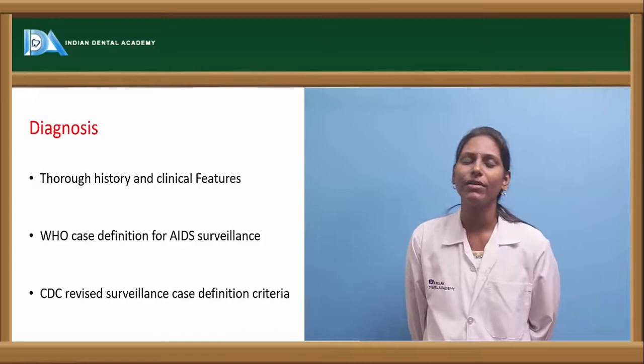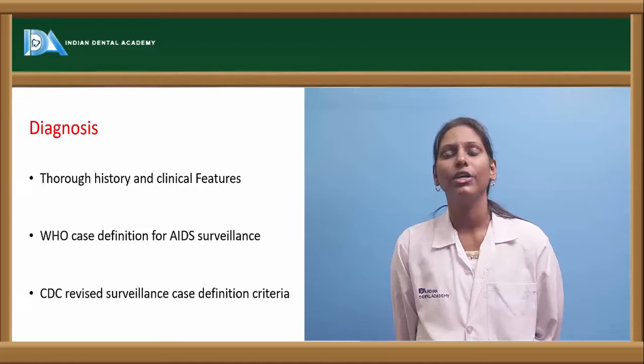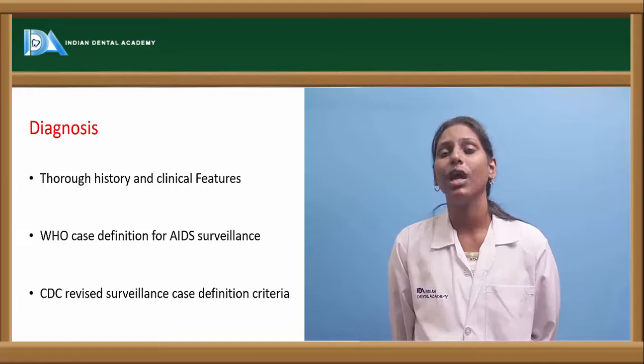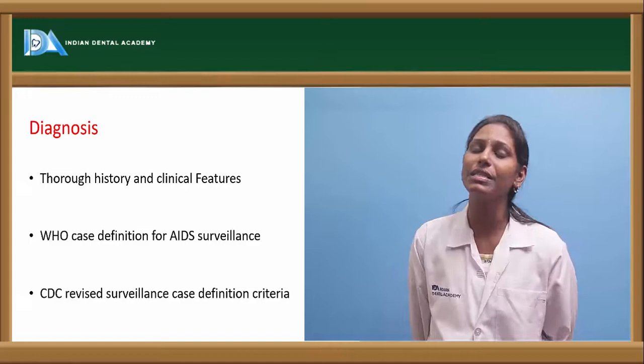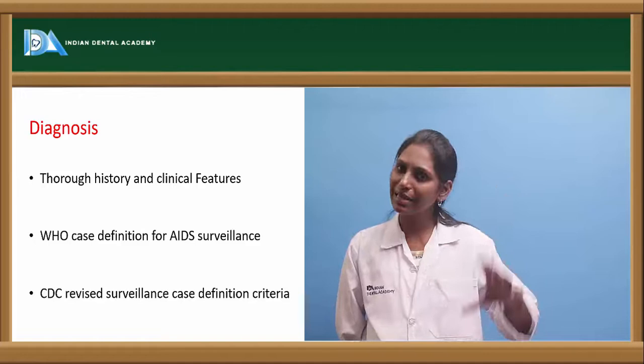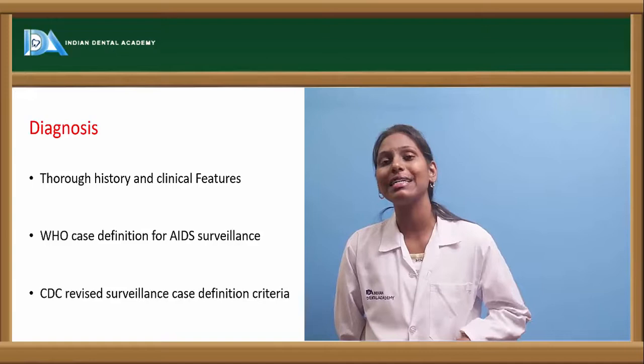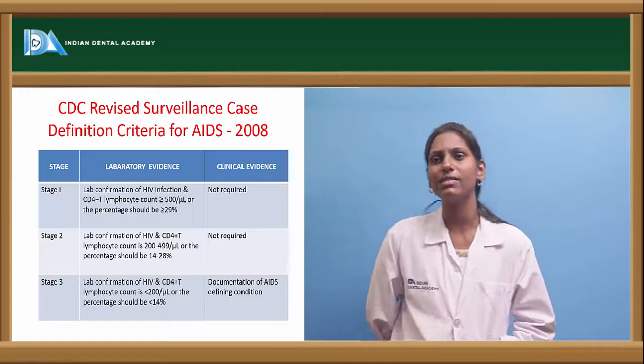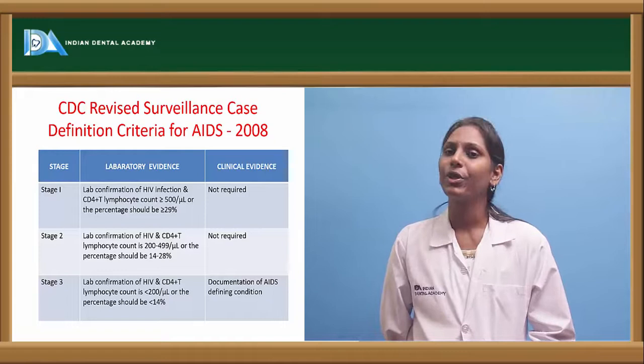Diagnosis of HIV AIDS involves a thorough history — asking about accidental blood transfusion, needle-prick injury, previous blood transfusion history, and unsafe sexual practices. Clinical features, particularly AIDS-defining conditions, help identify the stage. The WHO case definition for AIDS surveillance and the CDC revised surveillance case definition criteria can be used for staging. The CDC revised definition from 2008 divides disease severity into three stages.